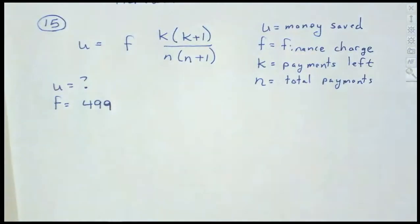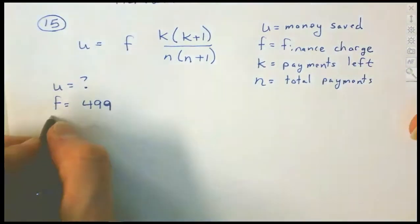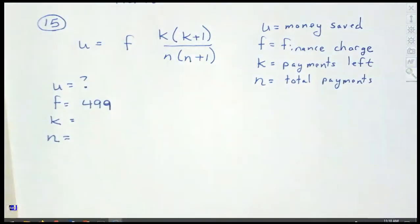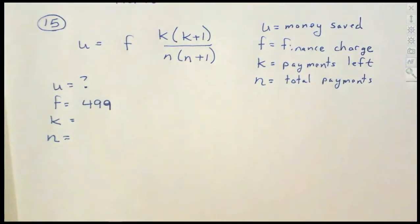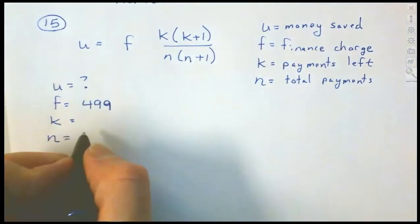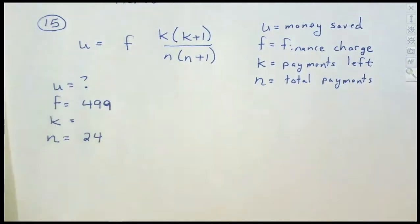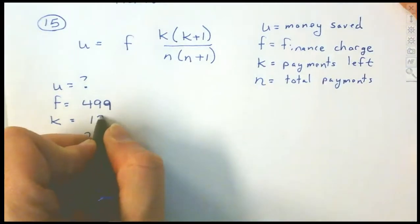What do we know? U is the unknown — how much we're going to save. F = $499, which is the finance charge. Every time you make a car payment, part goes to the bank as that finance charge. N is always the larger number — the total number of payments — so N = 24. K is the payments remaining: K = 13.